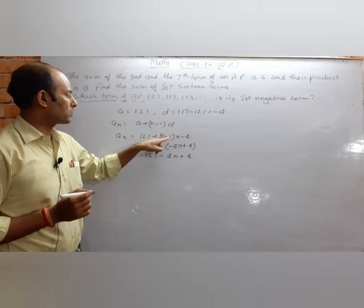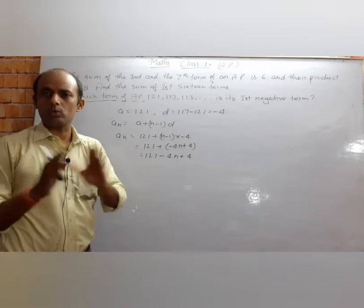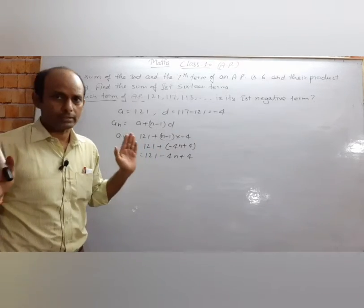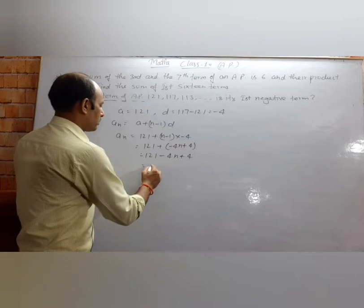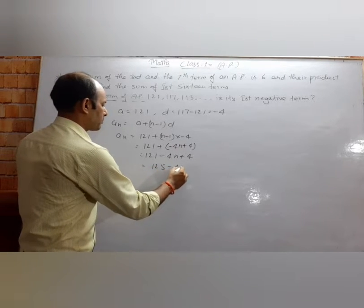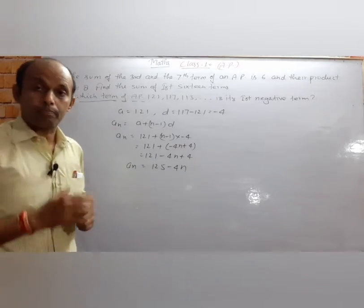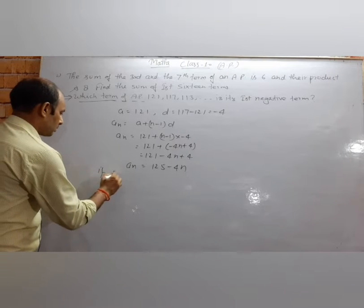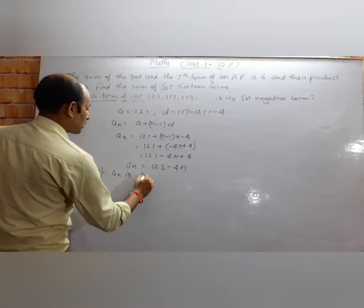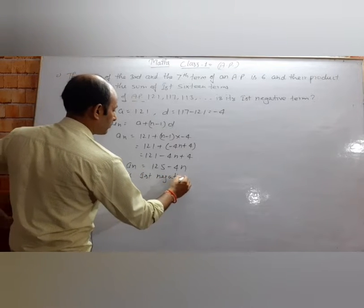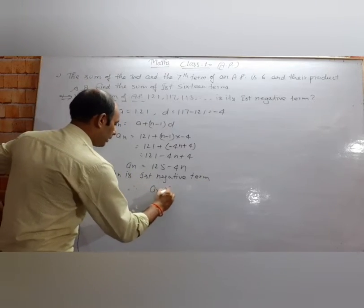When we take minus 4 out of the bracket, the sign inside does not change. So the nth term becomes 121 plus 4, which is 125, minus 4n. That is, a_n equals 125 minus 4n. If a_n is the first negative term, then a_n is less than 0.